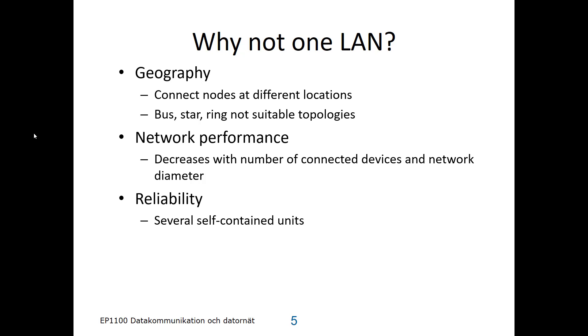There's also an issue of reliability. If the one network that you have fails, then there is no connection whatsoever. If you instead build a network out of different local area networks, then if one fails, at least the others who are not on the failed segment could continue to communicate.